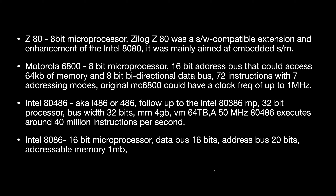The Motorola 6800 is also an 8-bit microprocessor designed and manufactured by Motorola. Its architecture and instruction set were influenced by the Digital Equipment Corporation PDP-11 minicomputer. The 6800 has a 16-bit address bus that could directly access 64 KB of memory and an 8-bit bi-directional data bus. It has 72 instructions with seven addressing modes, and the original MC 6800 could have a clock frequency up to 1 MHz.